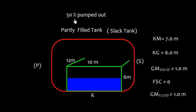Now, let us assume that this tank is 50% pumped out. So half of the tank is pumped out. We need to analyze what happens on the GM of this tank. Now the tank is partly filled or we call it as a slack tank and here the KM is 7 assuming that KM doesn't change but the KG has changed. The tank is slack and the liquid is free to move and this will cause a Free Surface Effect and eventually we need to have a Free Surface Correction.